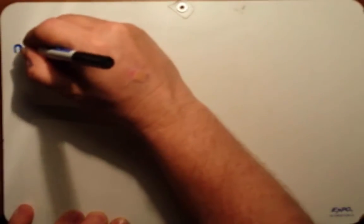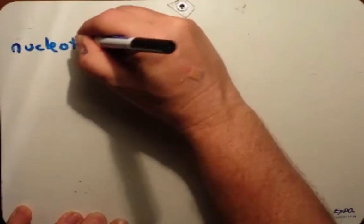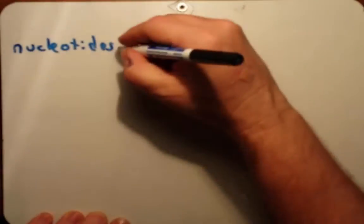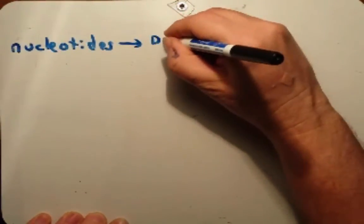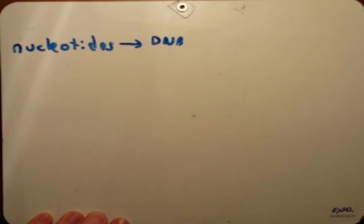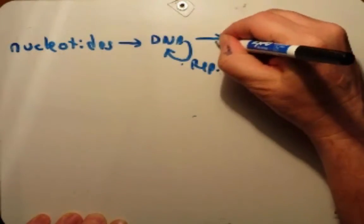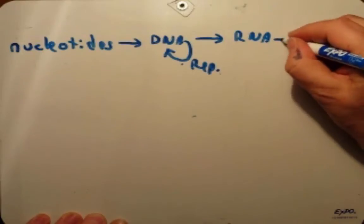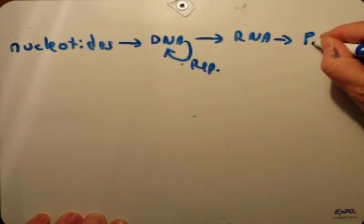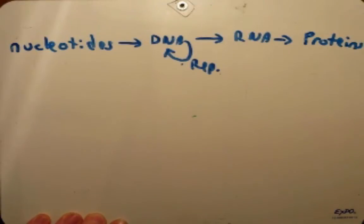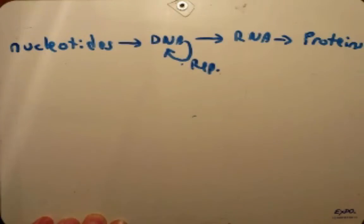I'd like to take us back just a little bit to have some perspective of where we've been and where we're going for the rest of the course. If you remember, we began this semester talking about nucleotides. We talked about how those strung together to form our DNA, and we talked about a lot of characteristics of DNA — including how it was replicated, how it could be turned into RNA, and how this RNA could be turned into proteins.